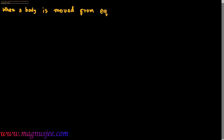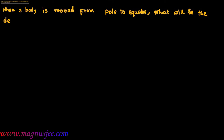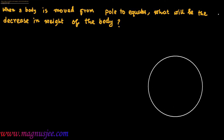When a body is moved from pole to equator, what will be there? Here we have to make a correction. When a body is moved from pole to equator, the weight of the body will be decreasing. Decreasing weight of the body.